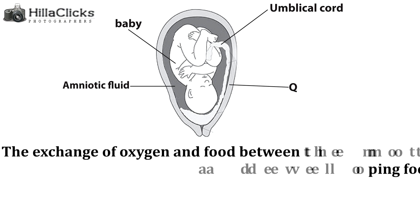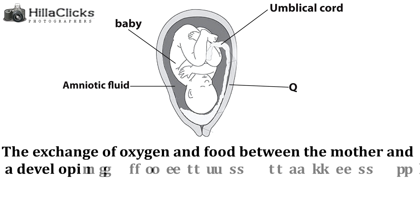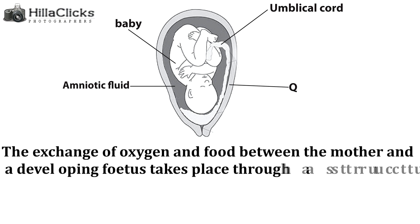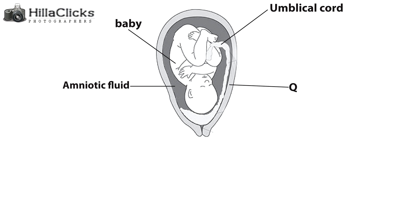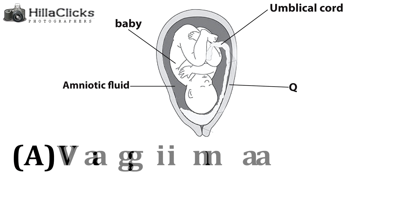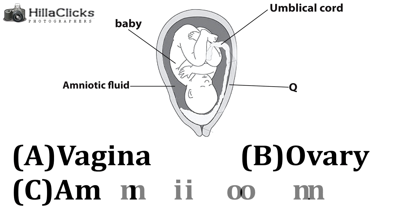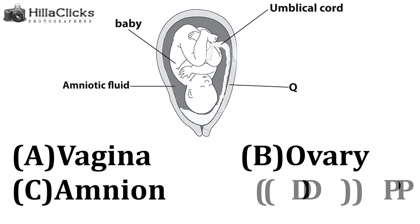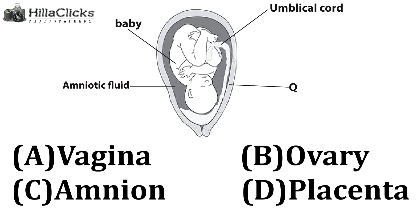The exchange of oxygen and food between the mother and a developing fetus takes place through a structure called: A - vagina, B - ovary, C - amnio, D - placenta. The answer is D - placenta.